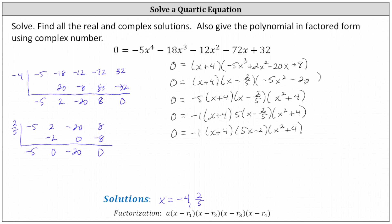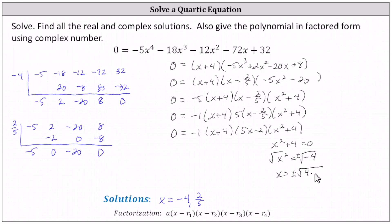Now to find the two remaining solutions, we set the factor of x squared plus four equal to zero and solve. First, subtract four from both sides. Then take the square root of both sides — we include a plus or minus on the right — which gives us x equals plus or minus the square root of negative four, which we can write as the square root of four times negative one. Recall the square root of negative one is equal to i. This gives us x equals plus or minus two i. So we have two complex, or two imaginary, solutions, as well as two real rational solutions. The four solutions are negative four, two fifths, negative two i, and positive two i.